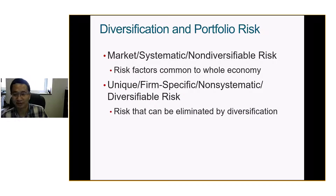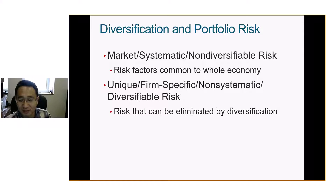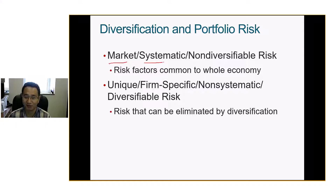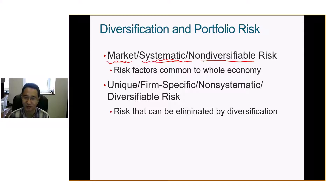Originally it was just math, but later they realized there were ideas behind it. Science needs theory. That's why they came up with different types of risk: market risk, also called systematic risk or non-diversifiable risk — risk factors common to the whole economy. And then there's unique firm-specific risk, or diversifiable risk — risks that can be eliminated by diversification.